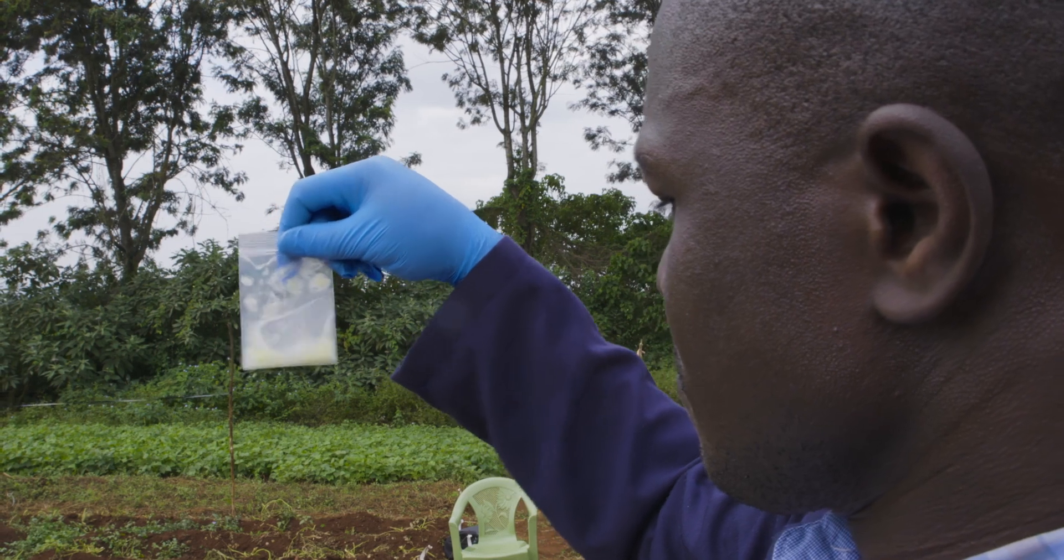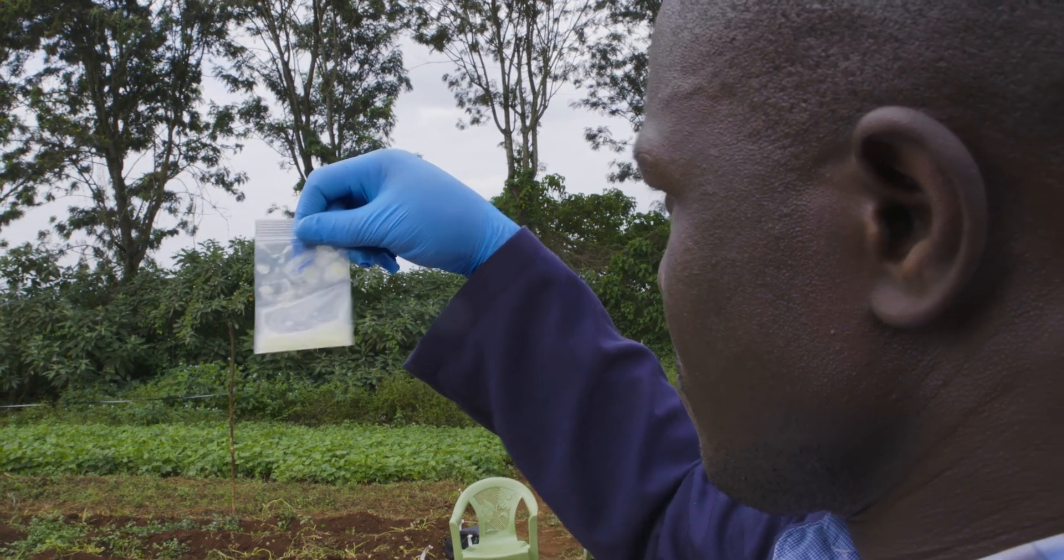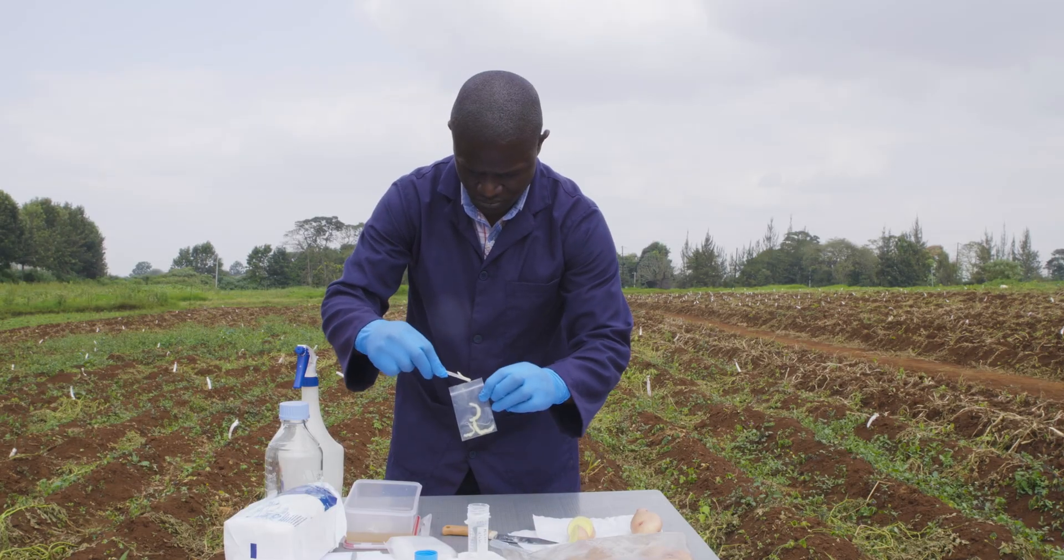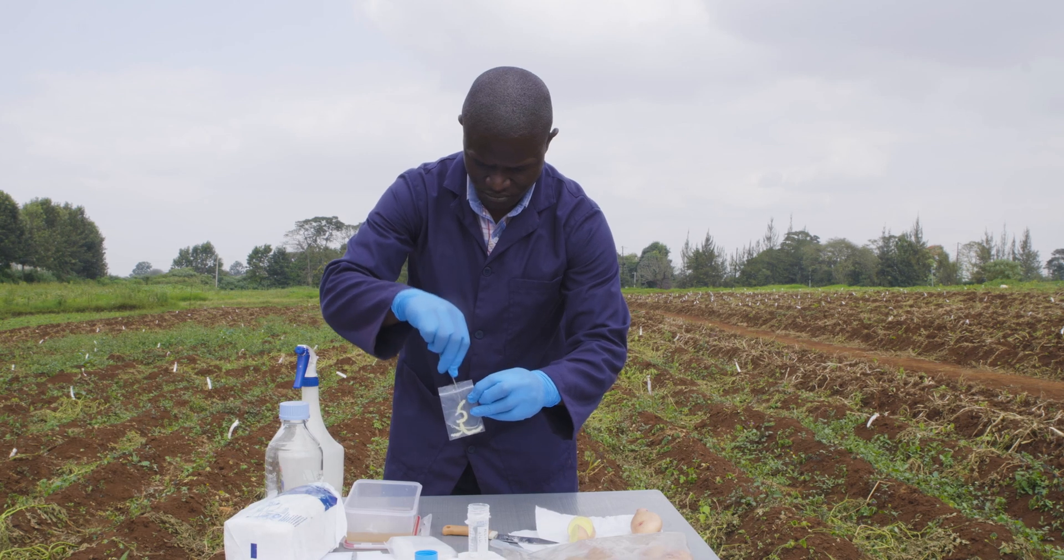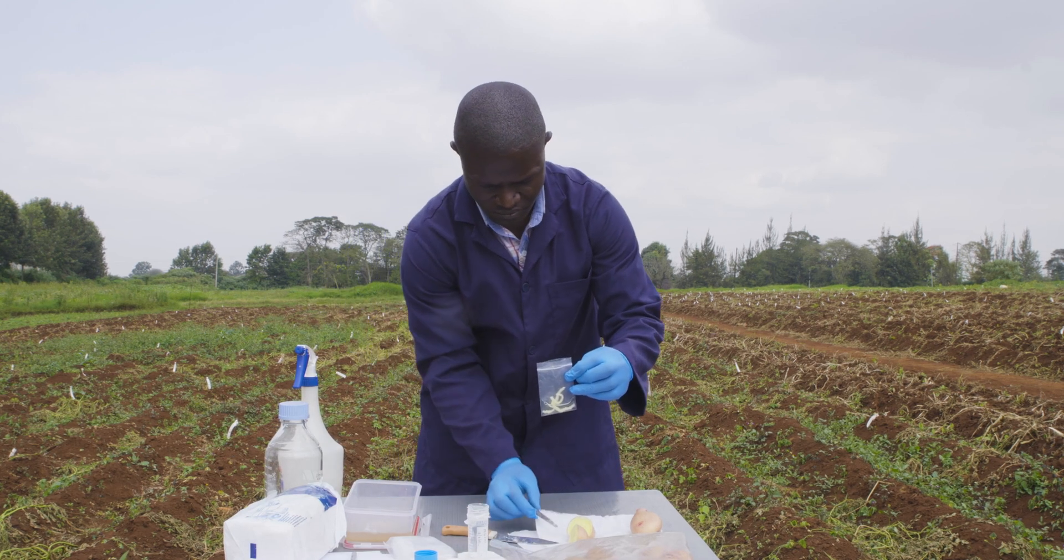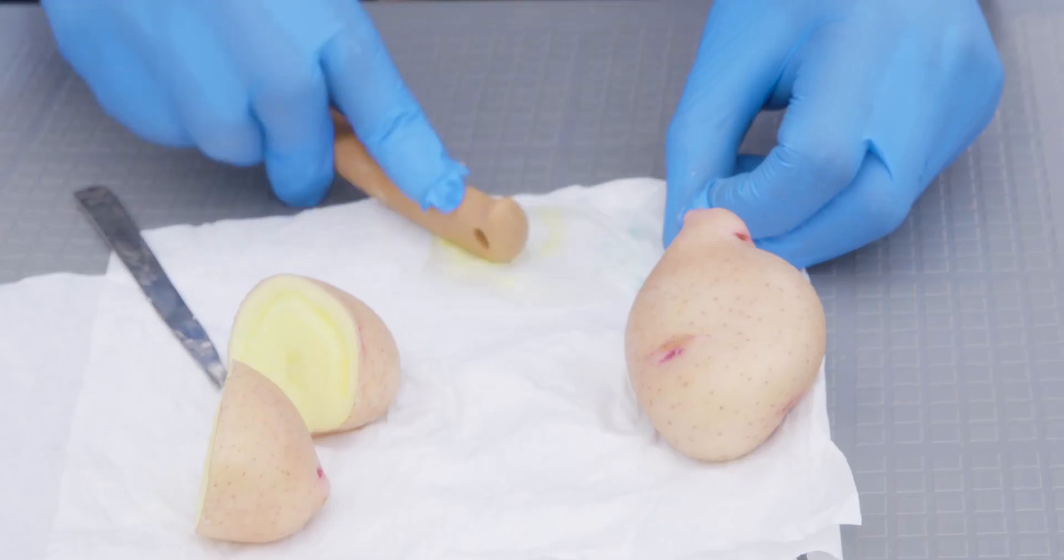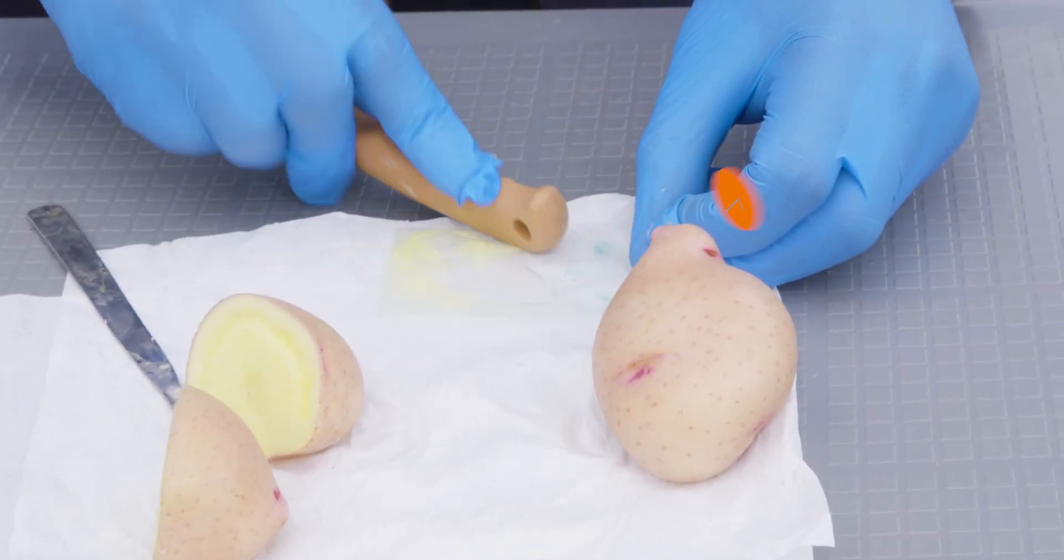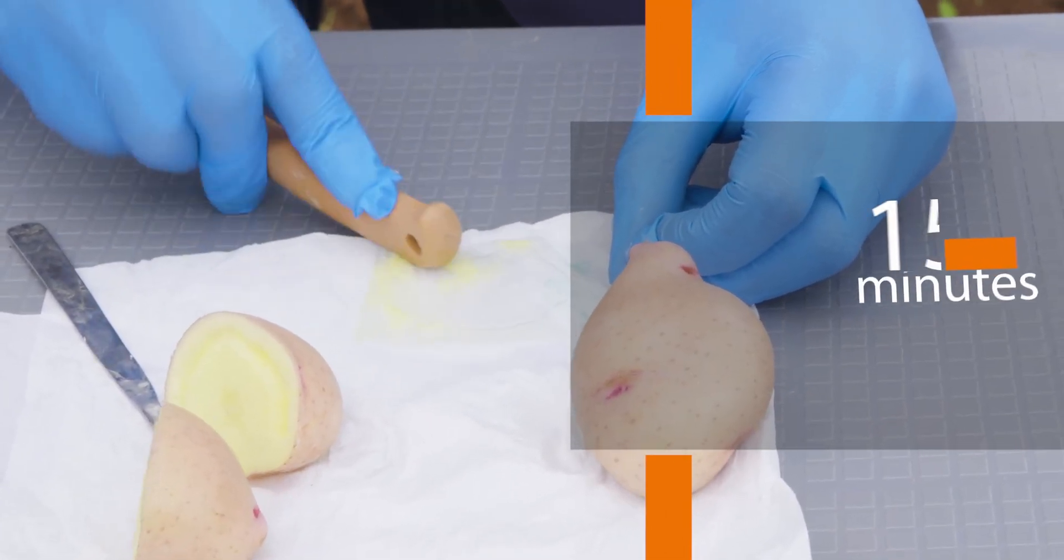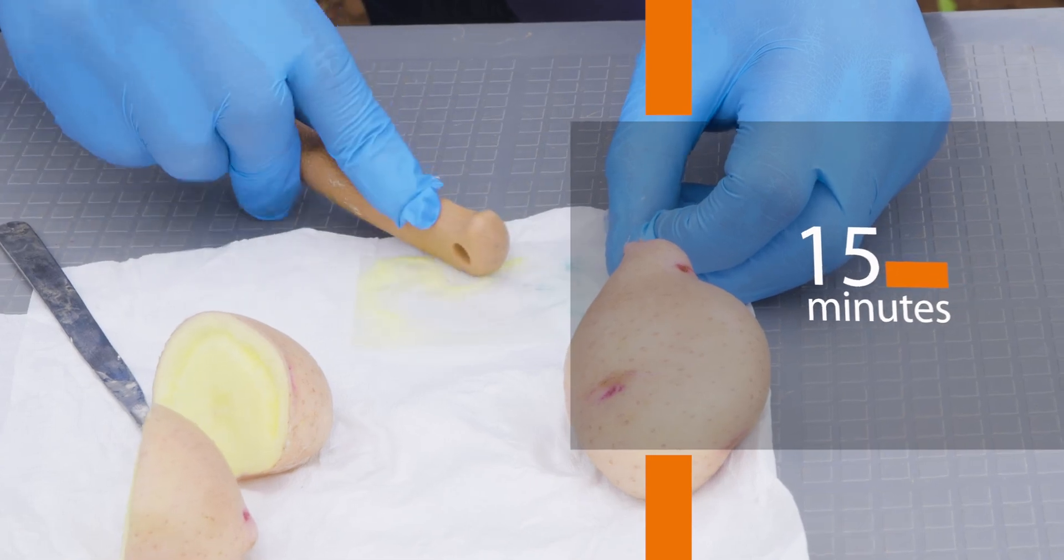If you are conducting a seed load test for latent infection, you can use a coring device attached to falcon tubes with an extraction buffer to collect composite tuber samples. Manually crush the sample and let it stand for 15 minutes before using it as a template for lamp reaction.